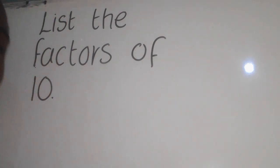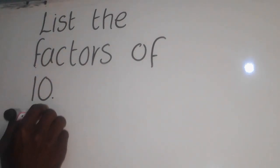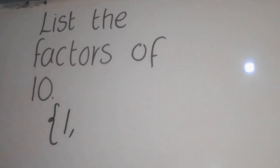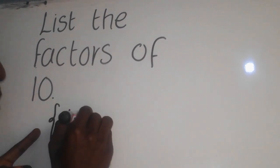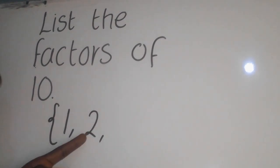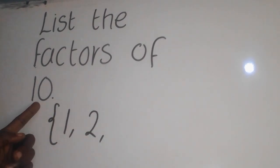Now what numbers are those? So numbers here, we have 1 because 1 can go into 10 and give me 10. The other number is 2 because 2 can go into 10 and give me 5.